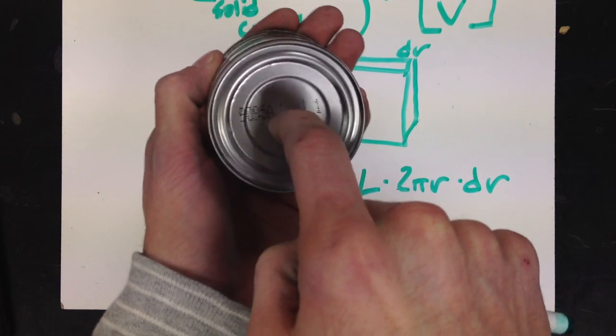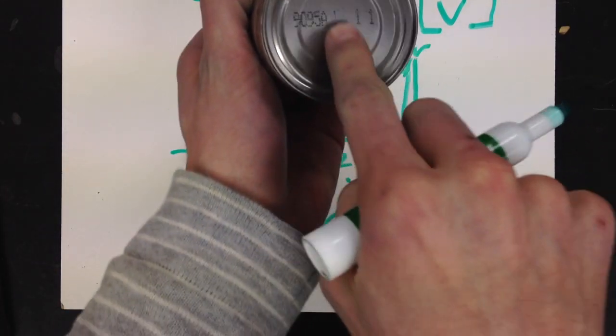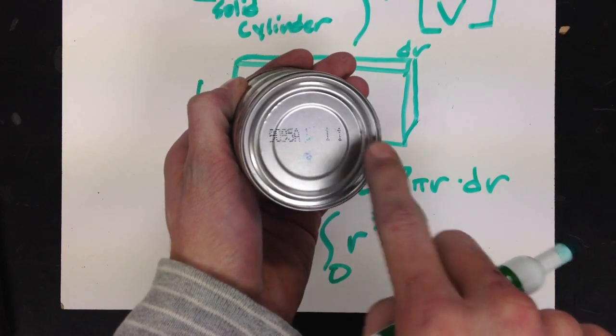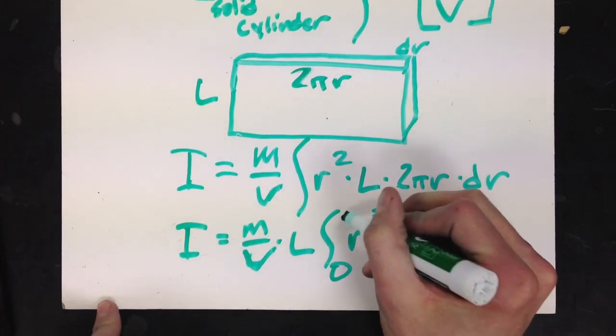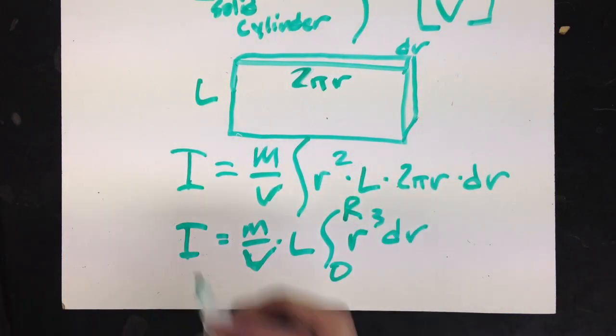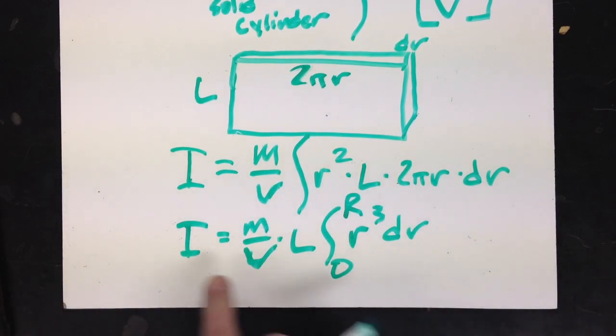Well, it starts at zero. So that would be one of my limits, zero. And I would go all the way out to r, the radius of the can. So simplify that, conduct that integration, and you will have the moment of inertia of your cylinder.